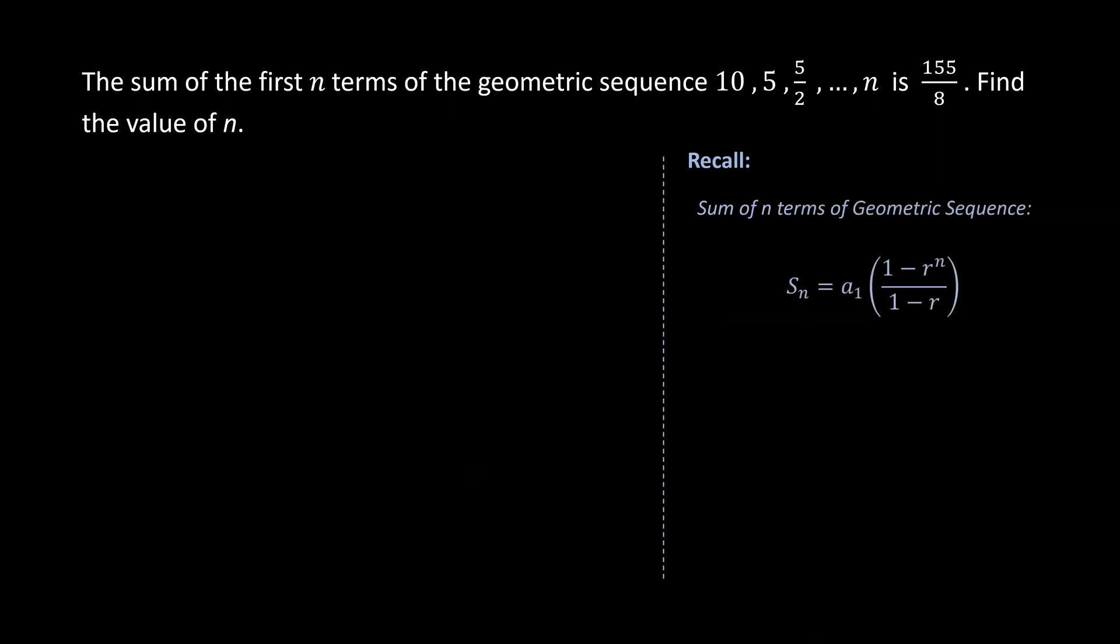Recall that the sum of n terms of a geometric sequence is given by the formula where a1 is the first term and r is the common ratio.